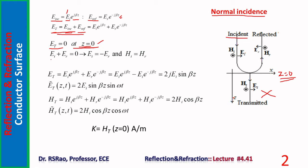Enforcing the boundary condition gives E_i plus E_r equals zero, or E_r equals minus E_i. This means the electric field in the reflected wave is opposite in direction compared to the incident wave — electric field undergoes a phase change of 180 degrees on reflection from the surface of a perfect conductor. This is an important conclusion: E_r equals minus E_i.